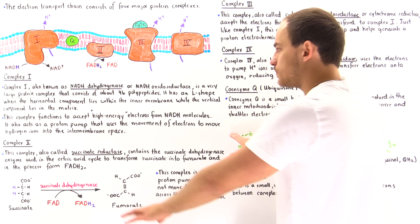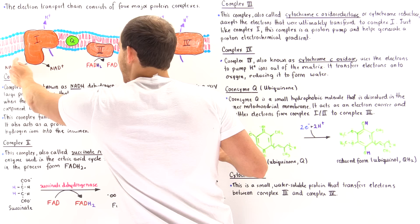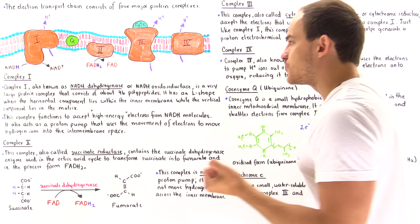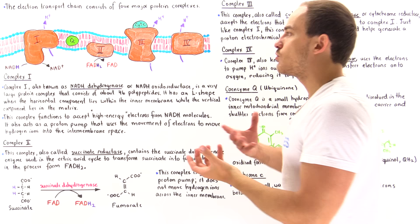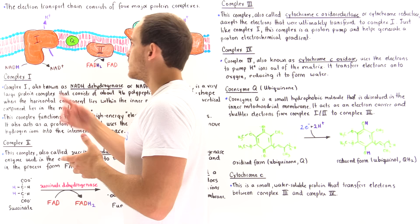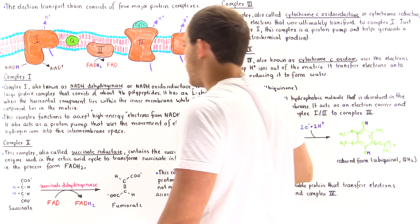The function of complex 1 is to oxidize NADH back to NAD+, accept those high-energy electrons, and move them along a specific pathway. That generates an electric current that allows us to pump those H+ ions across the membrane — from the matrix into the intermembrane space.